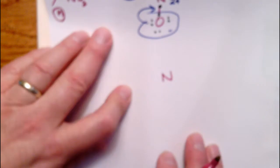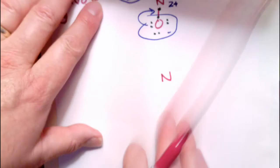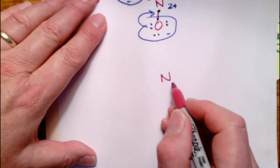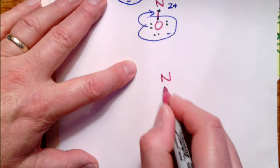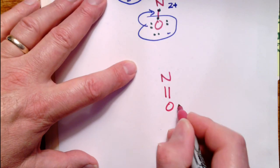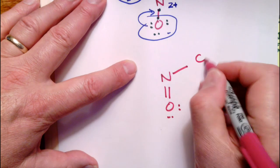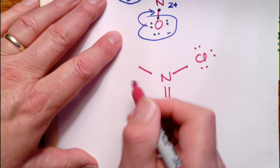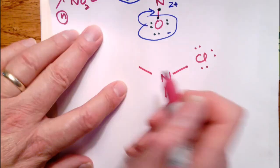So we have a nitrogen. We said we're going to have a double bond to O, single bond to Cl, and a single bond to O here.